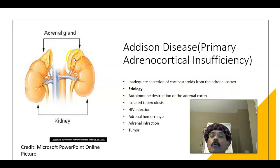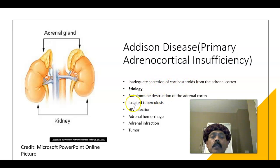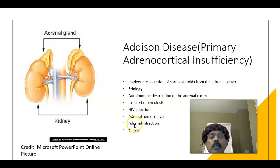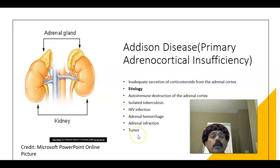What are the causes of Addison's disease? Addison's disease is mostly caused by autoimmune destruction, tuberculosis, HIV infection, adrenal hemorrhage, adrenal infarction, tumor, and even some fungal infections.